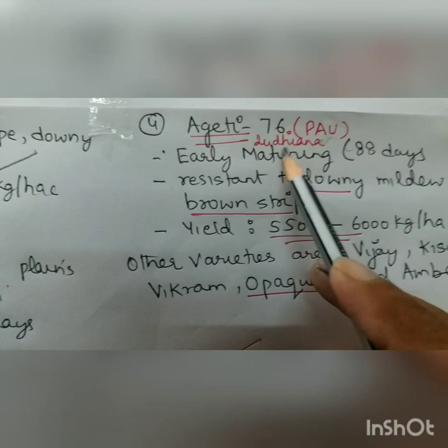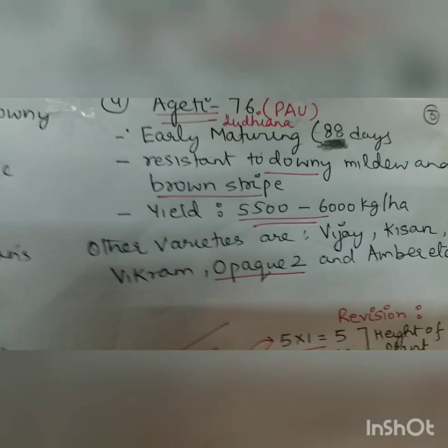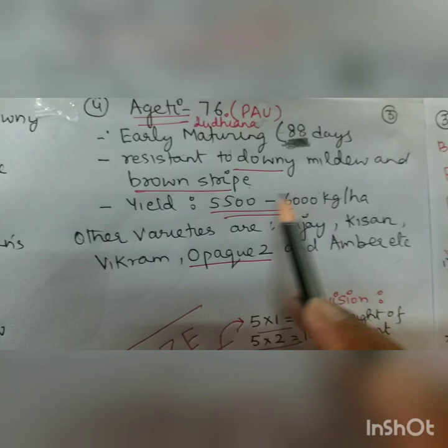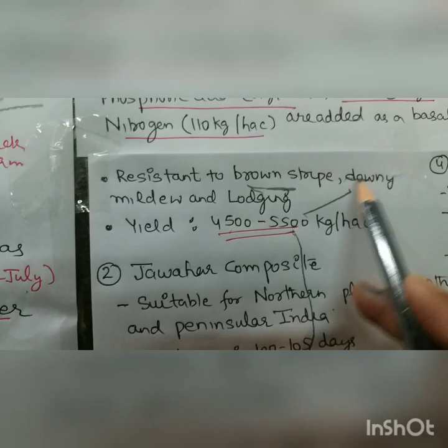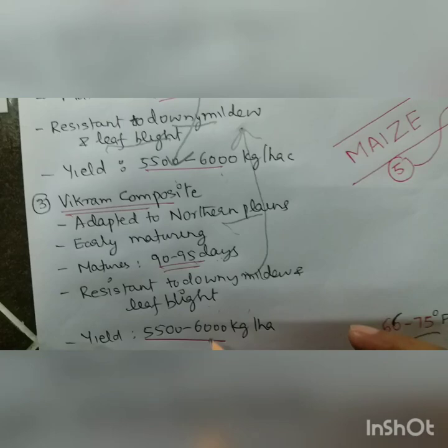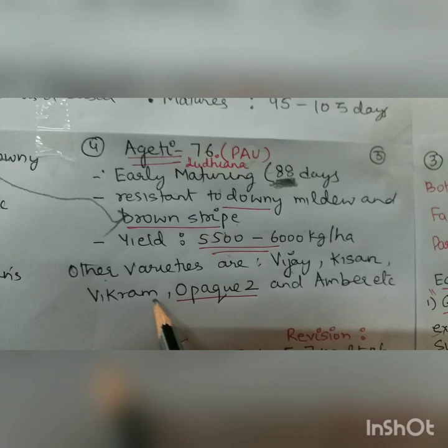The last variety is Geti 76, a recently developed variety released by Punjab Agriculture University, Ludhiana. It has early maturity — only 88 days — giving farmers time to grow legume crops for animals and small crops like methi and mustard. It is resistant to downy mildew and brown stripe, and yields 55 to 6700 kg per hectare. Other varieties include Vijay, Kisan, Vikram, Opaque 2, and Amber.